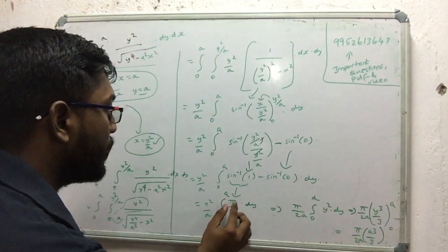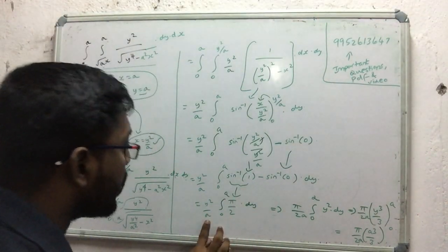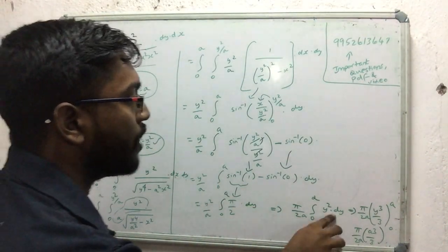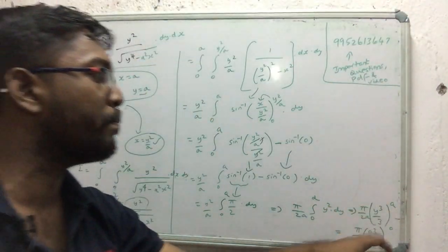If you have dy, you can use this one. Then you can use y squared dy. If you do the y squared dy, you can use y cubed by 3. That's why you use a cubed by 3.